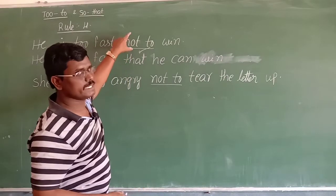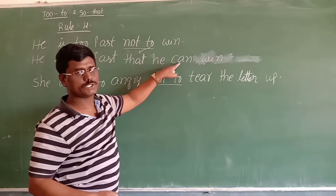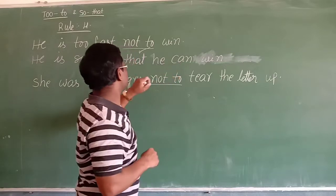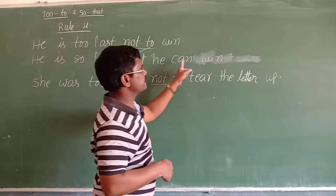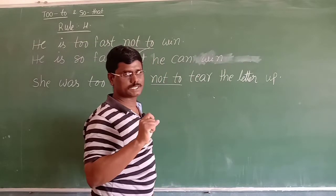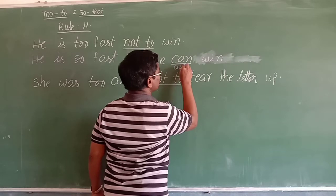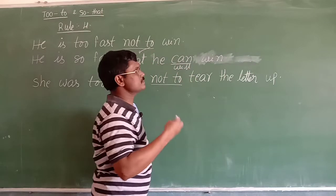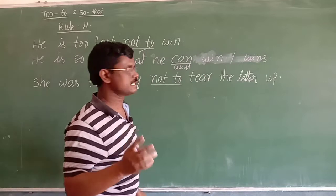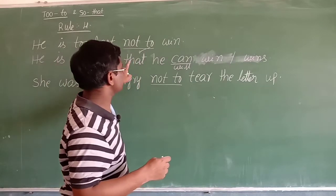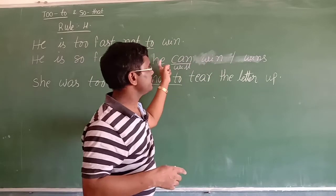Friends, when there is a negative to-infinitive here, we should not write negative in the result clause. When this is positive (no 'not to'), we write 'cannot' or 'could not'. But when there is a 'not to' (negative infinitive), the two negatives cancel and we write a positive: 'can win', 'will win', or directly 'he wins'. So: 'He is so fast that he can win' or 'he will win' or 'he wins.'